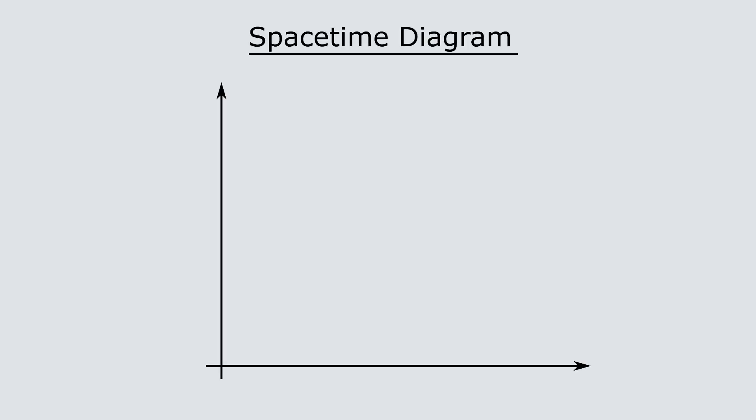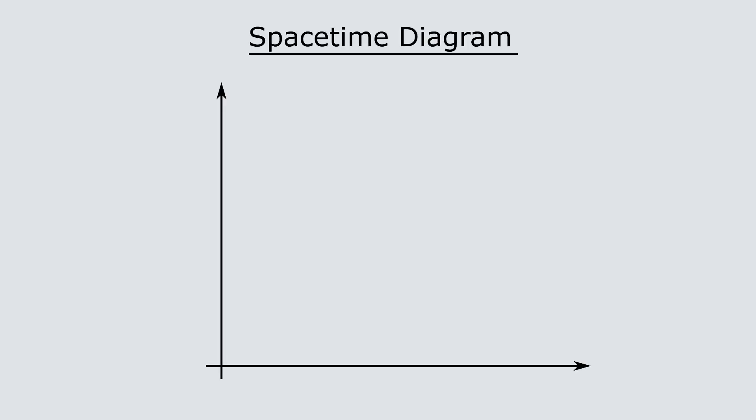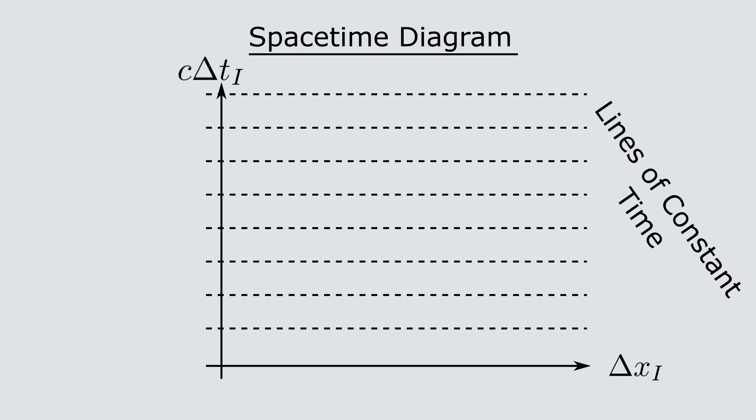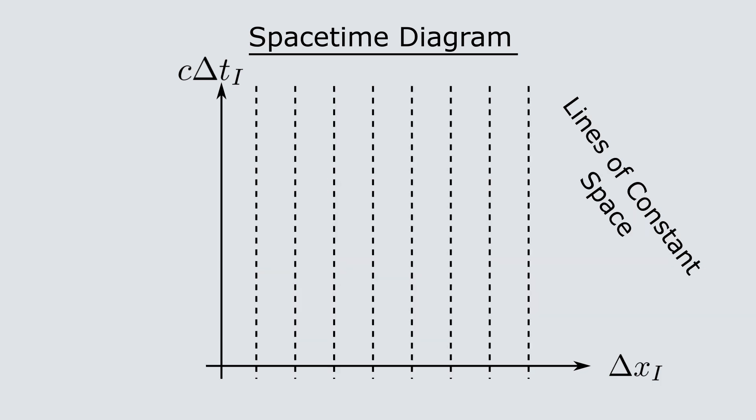The spatial coordinate parallel to the train tracks, call it delta xi, will be plotted on the horizontal axis and the time coordinate, call it delta ti times the speed of light c, will be plotted on the vertical axis. The purpose of multiplying by c is just so that light will travel along lines with the slope of 1 instead of 1 divided by c, which is quite small in everyday units. On this plot, lines of constant time in Isaac's frame will be horizontal lines and vertical lines will be fixed spatial points.